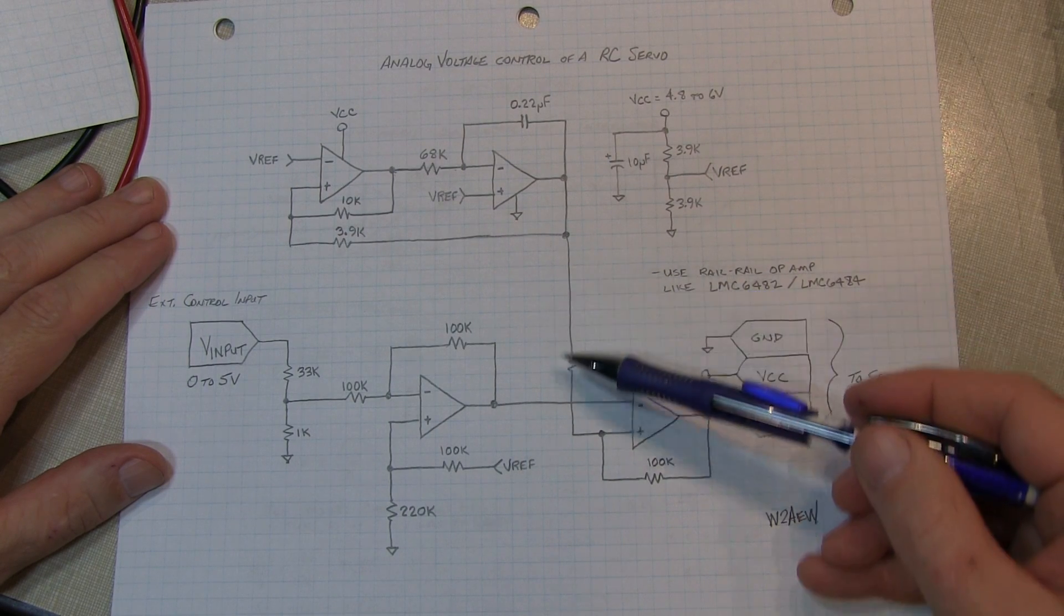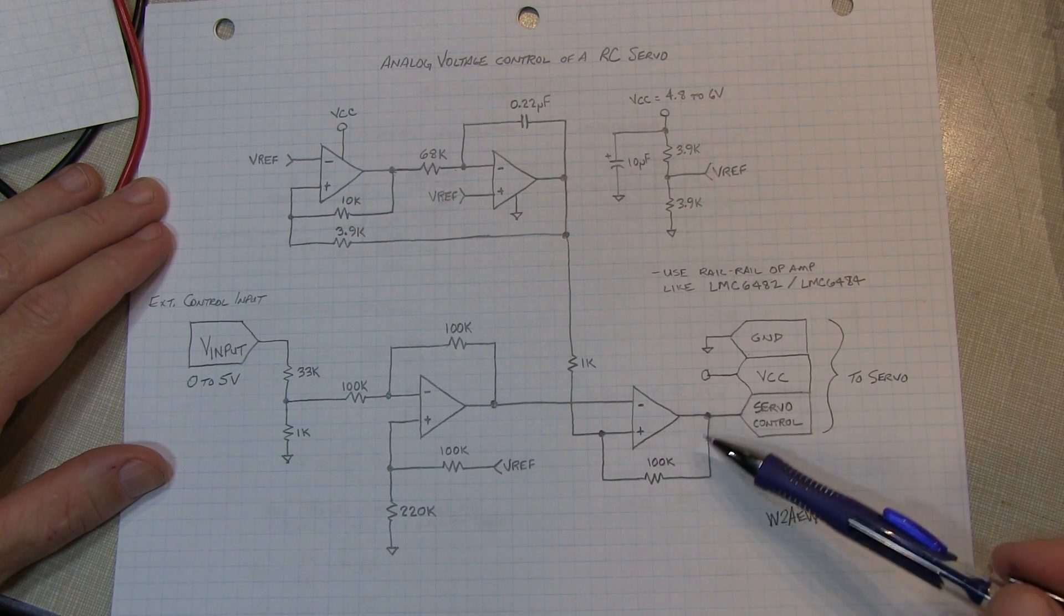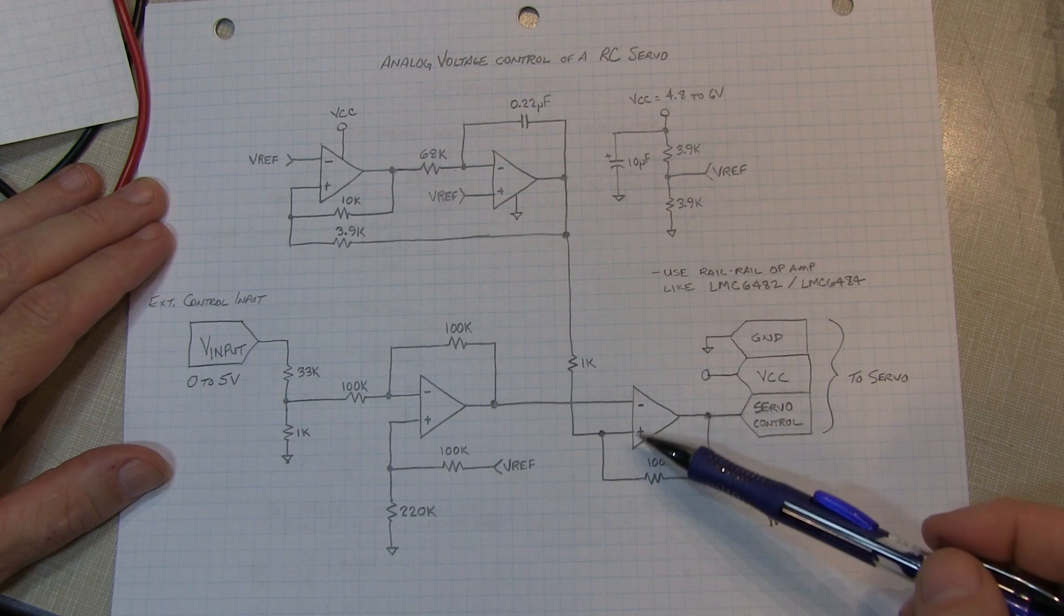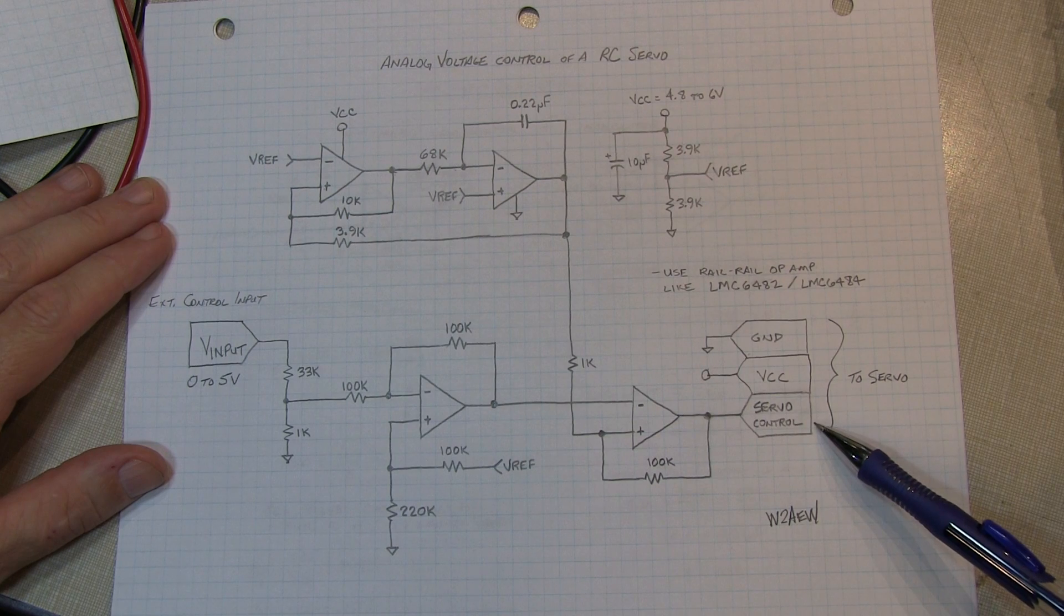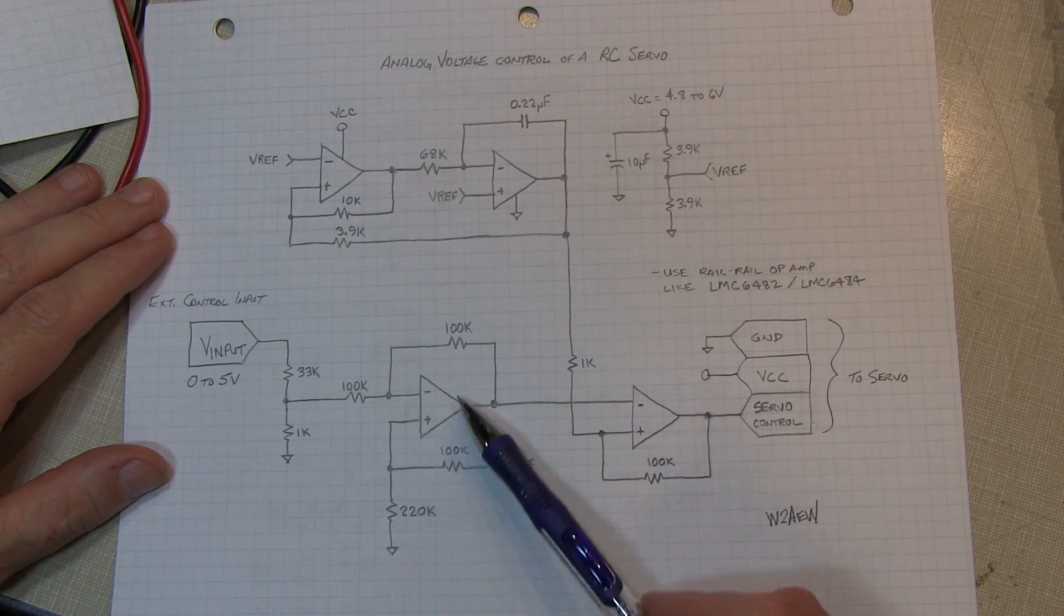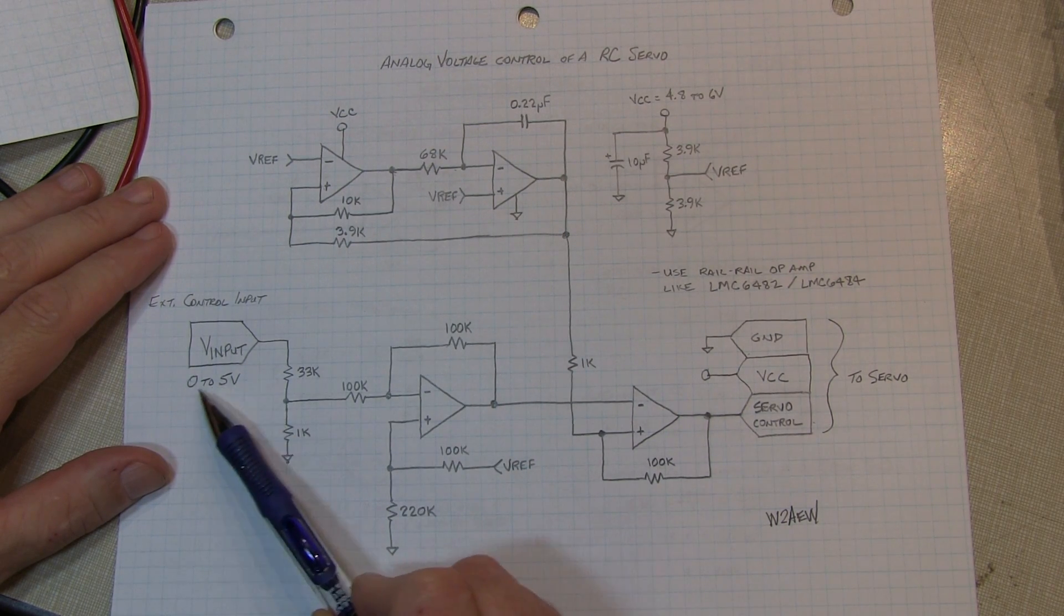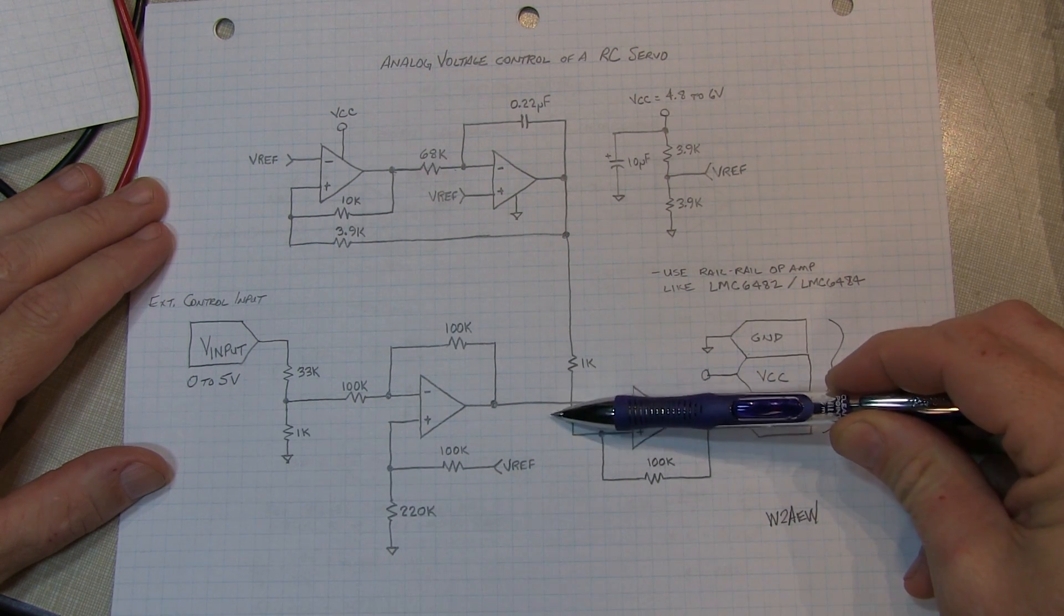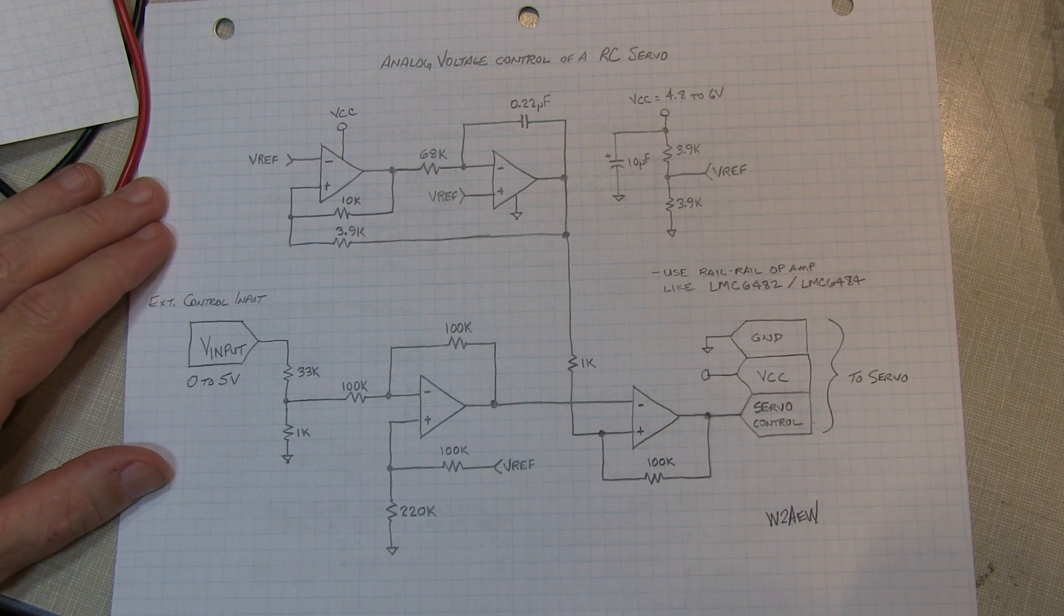So that triangle wave output is fed into another comparator here, again just another one of those rail-to-rail op-amps. There's a little bit of positive feedback fed around this one as well to create a little bit of hysteresis to prevent any chattering occurring at this output. And that is what goes out and forms the servo control. And the last bit of it is this op-amp here, which is just a signal conditioner to take my 0 to 5 volt analog control voltage input and turn it into a small changing DC voltage that we're using to snip off the top of that triangle wave to create our narrow pulse.